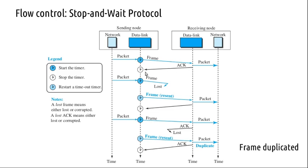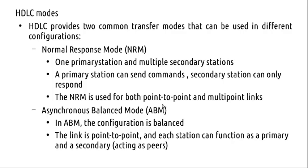Rather than sending a separate acknowledgement frame, you can club it to a data frame going in the other direction — from node 2 to node 1. That is piggybacking, getting a free ride on a data frame. All these things require control bits in the frames to indicate whether it is a piggyback frame, a data frame, or something meant for controlling — supervisory. All those things are taken care of in HDLC.